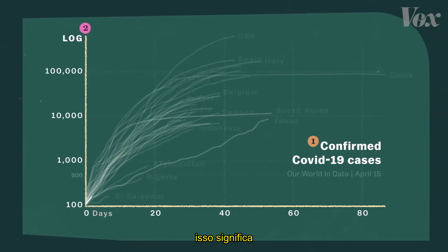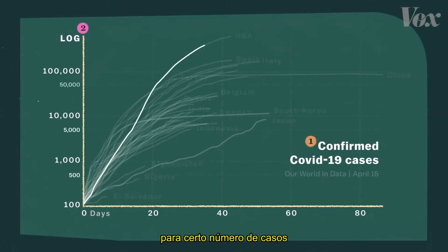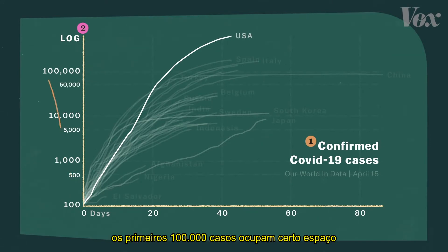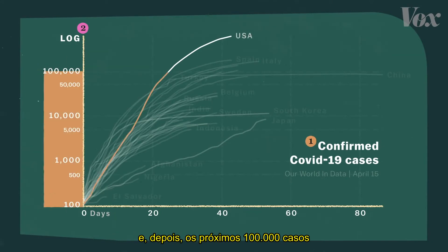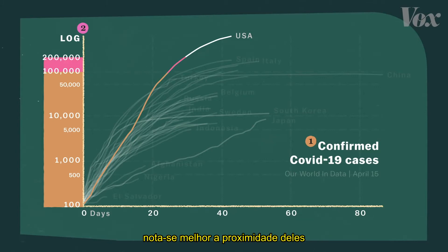That means there's no fixed amount of space on this chart for a certain number of cases. So the first 100,000 cases take up this much space, and then the next 100,000 cases get just this much. The higher the numbers, the more visibly squished they become on a log scale.